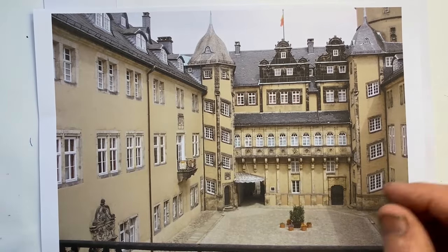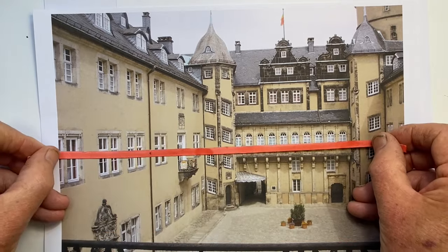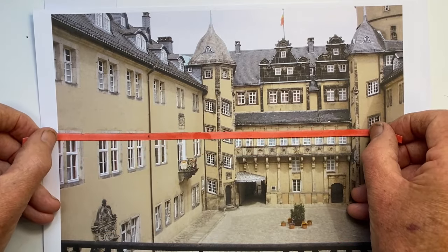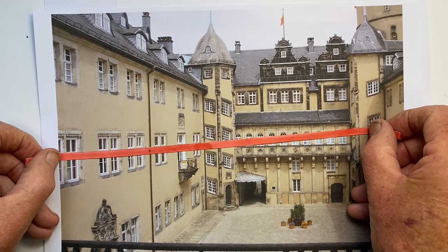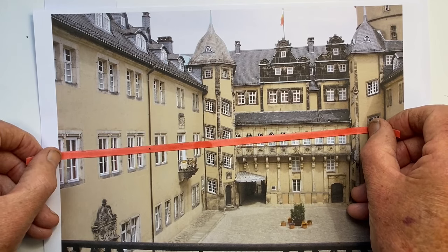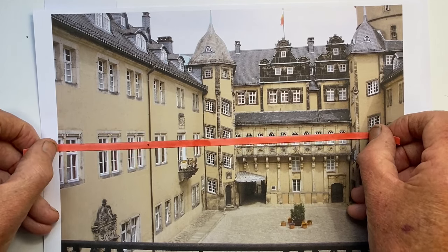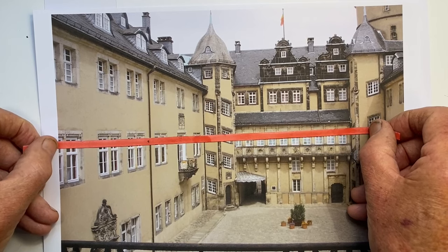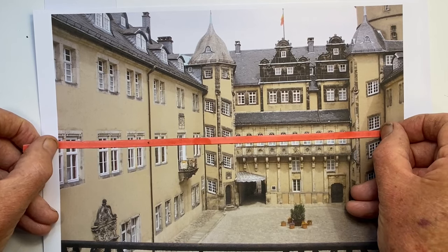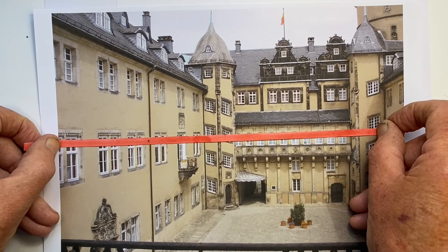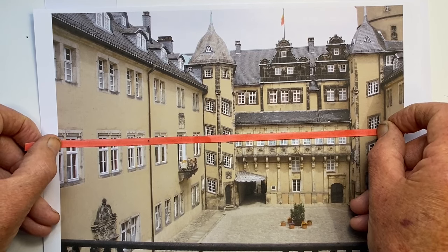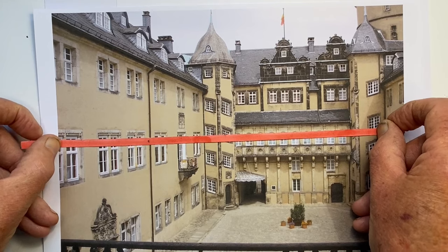And even in a scene such as this, there will still be a horizontal line. Now this line slopes down and this line slopes up, so the horizontal line will be somewhere in between those two lines. So there need not necessarily actually be a line in the architecture on eye level.